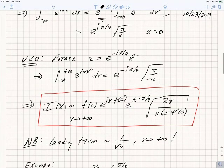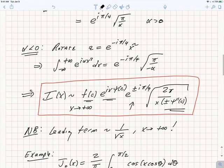Putting it all together, you find that the asymptotic form for I(x) is f(c)e^(ixψ(c)) times e^(±iπ/4), depending on whether the second derivative of ψ is positive or negative, times the square root of 2π over x times the absolute value of ψ''(c).